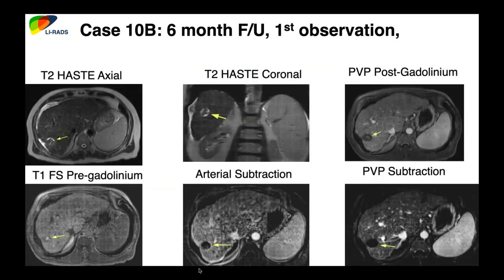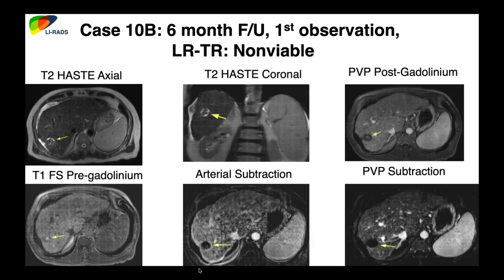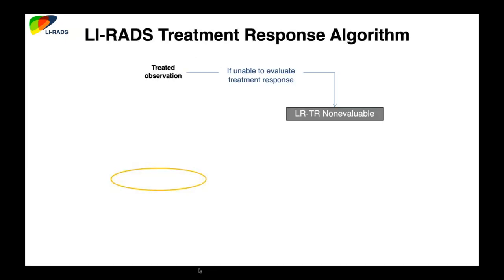The patient came back months later. On the bottom subtraction image there is clearly no more arterial enhancement. On pre-gadolinium imaging there's a bright spot — likely residual hemorrhage and proteinaceous material, commonly seen after local regional therapies like RFA and microwave. On six-month follow-up, we can confidently call this LR non-viable.